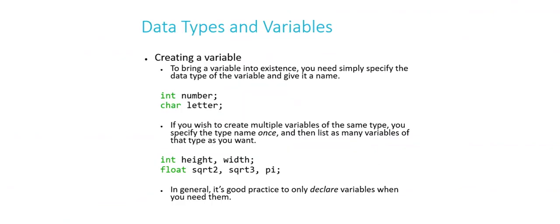If you find yourself in a situation where you need to create multiple variables of the same type, you only need to specify the type name once. Then just list as many variables of that type as you need. So I could, for example, here in this third line of code, say int height semicolon, new line, int width semicolon, and that would work too. I'd still get two variables called height and width, each of which is an integer. But I'm allowed to, thanks to C syntax, consolidate it into a single line. Int height comma width semicolon. And it's the same thing. I've created two variables, one called height, one called width, both of which are capable of holding integer type values.